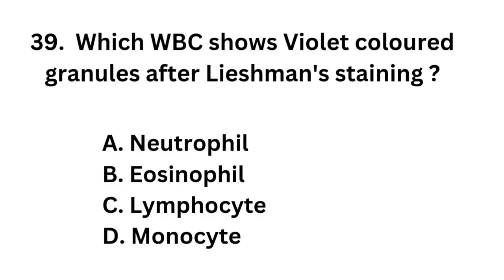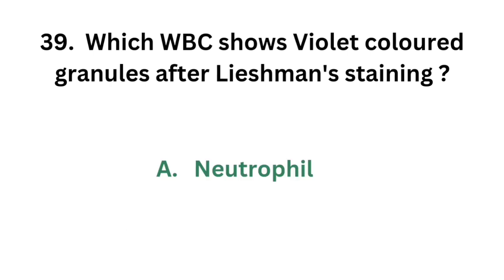Question number 39: Which WBC shows violet colored granules after Leishman's staining? Option A: Neutrophil. Option B: Eosinophil. Option C: Lymphocyte. Option D: Monocyte. The correct answer is option A: Neutrophil.